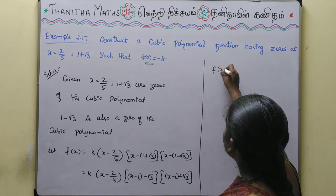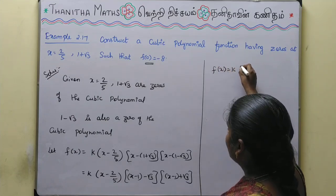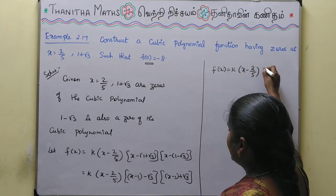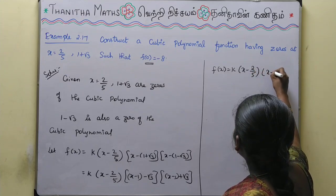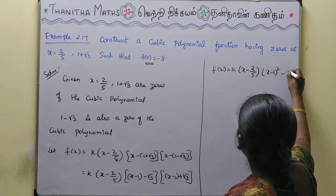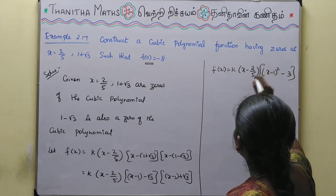So f(x) = k · (x - 2/5) · [(x - 1)² - 3], using the identity (x - 1 - √3)(x - 1 + √3) = (x-1)² - 3.